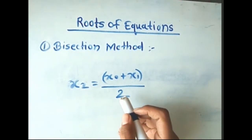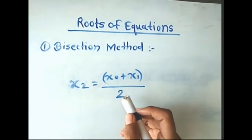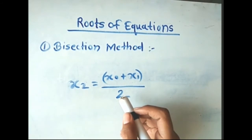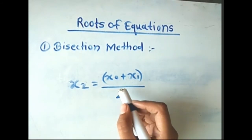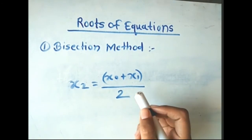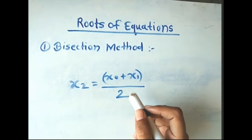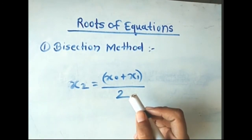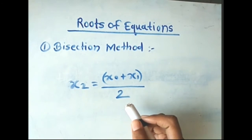There are three possibilities: First, if f(x₂) = 0, then x₂ is the root of the equation f(x). Second, if f(x₀) × f(x₂) < 0, that is f(x₀) and f(x₂) are of opposite signs, then there exists a root between x₀ and x₂.